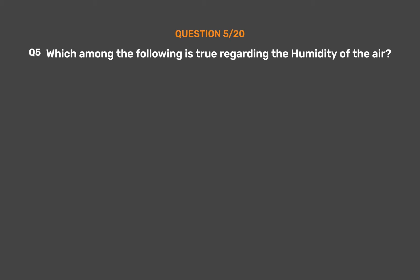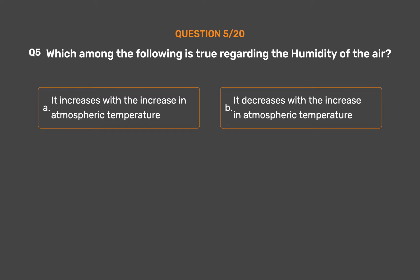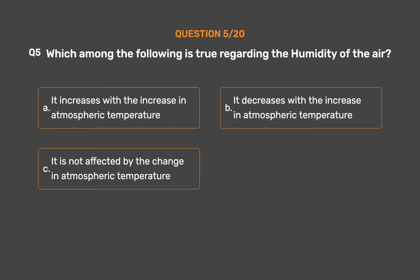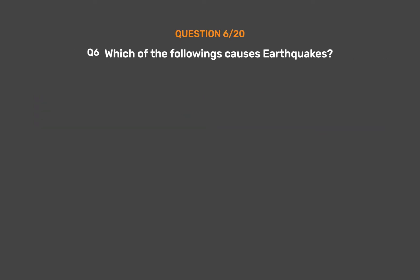Question number 5. Which among the following is true regarding the humidity of the air? Option A: It increases with the increase in atmospheric temperature. Option B: It decreases with the increase in atmospheric temperature. Option C: It is not affected by the change in atmosphere. Option D: It does not show any consistent behavior with the change in atmospheric temperature. The correct answer is Option A, it increases with the increase in atmospheric temperature.